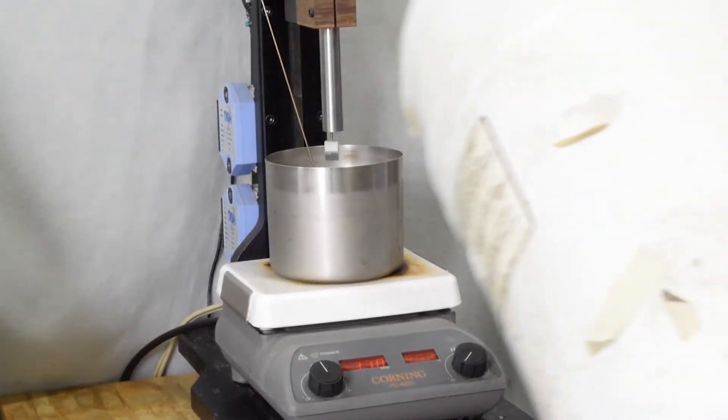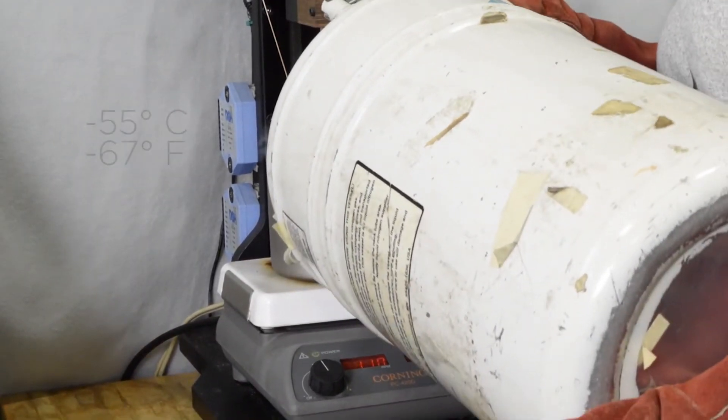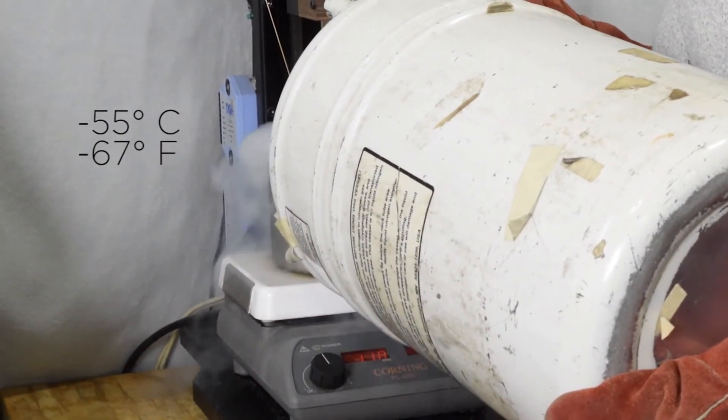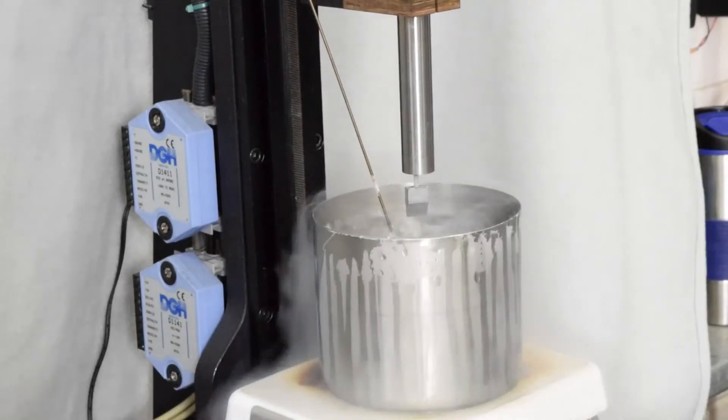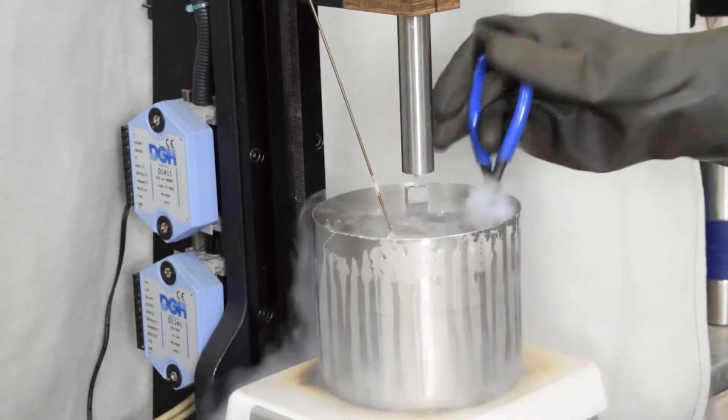You will then add liquid nitrogen in order to properly cool the bath to a minimum of negative 55 degrees Celsius. A solid condensation will start to form from the nitrogen and you will need to break it up.